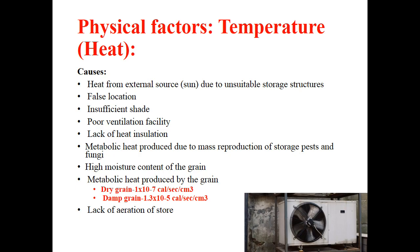Let's start with physical factors. If we take temperature or heat, this is caused by external sources like the sun due to unsuitable storage structure, false location, insufficient shade, poor ventilation facilities, lack of heat insulation or regulation, and metabolic heat produced by mass reproduction of storage pests and fungi. There will be mass production of both pests and organisms inside the storage godowns, high moisture content of grain, and metabolic heat produced by the grain itself — and lack of aeration.